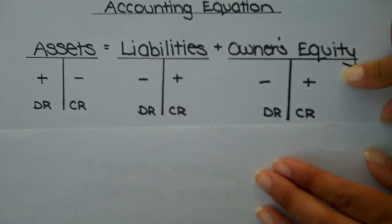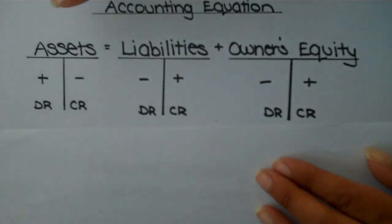So again, not too hard. We know this accounting equation needs to remain in balance. So if assets increase on the left, then your liabilities and owner's equity will need to increase on the right-hand side or credit side.